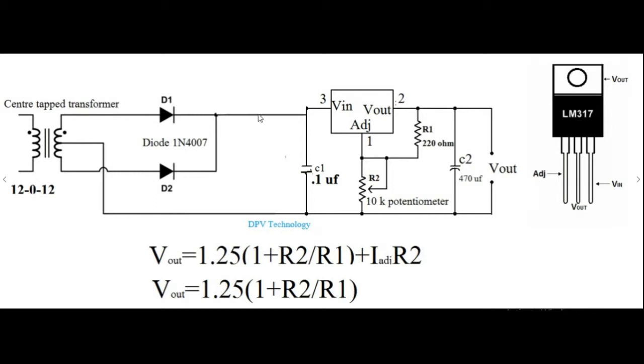This 12 volt DC is given to the input of the LM317 regulator. Here we are using a 0.1 microfarad capacitor at the output of the diode. This capacitor rejects the ripples present in the output of the diode.